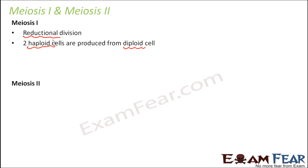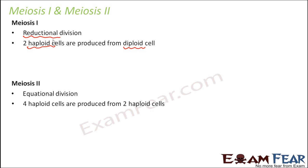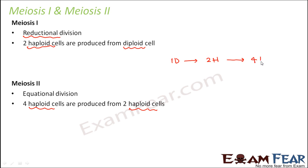Whereas meiosis 2 is very similar to mitosis — it is an equational division. Why? Because here 4 haploid cells are formed from 2 haploid cells, so it is haploid to haploid. There is no change in the ploidy of the cell; if it has n set of chromosomes, it still has n set of chromosomes. So overall in meiosis: one diploid cell first forms 2 haploid cells, then these 2 haploid cells form a total of 4 haploid cells. The first step is reductional, the second step is equational.